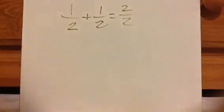So let's start with this one right here. 1 half plus 1 half equals 2 halves. I know that's 2 halves because I have 2 pieces and they are in halves. So that's how it looks.